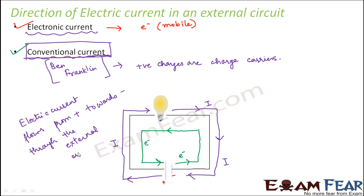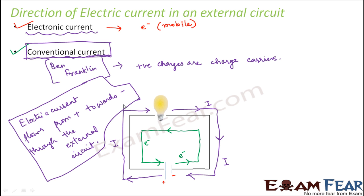Many people get confused here. Even though current as a physical quantity is a scalar quantity — determined only by its magnitude — we do talk about the direction of current when discussing an electric circuit, to know from which terminal to which terminal the current is flowing. We will always follow the direction of conventional current, that is from the positive terminal towards the negative terminal of the external circuit.